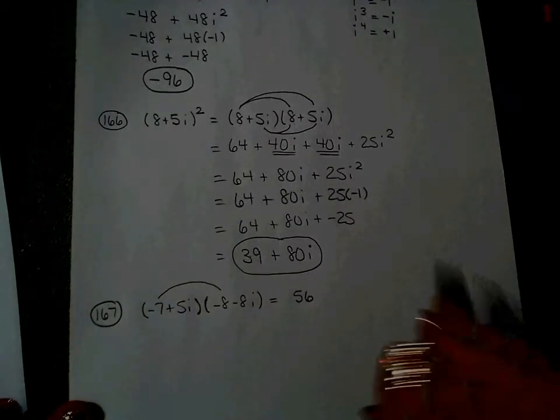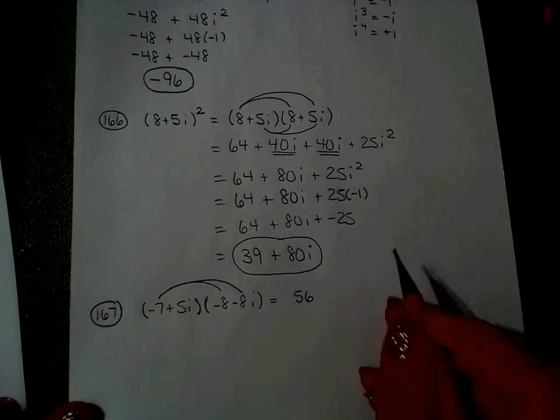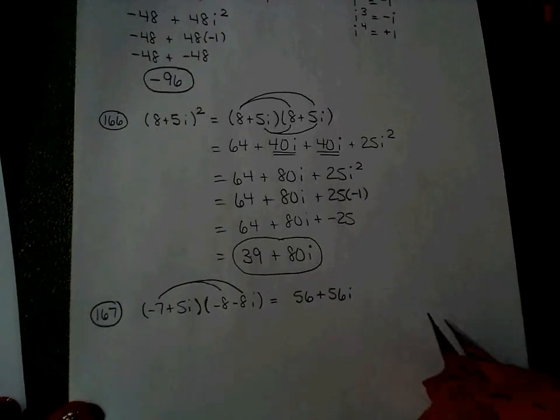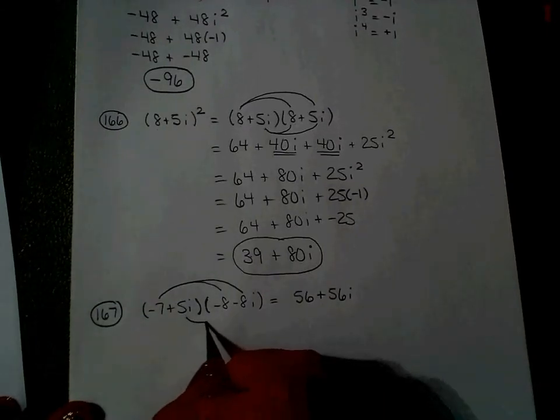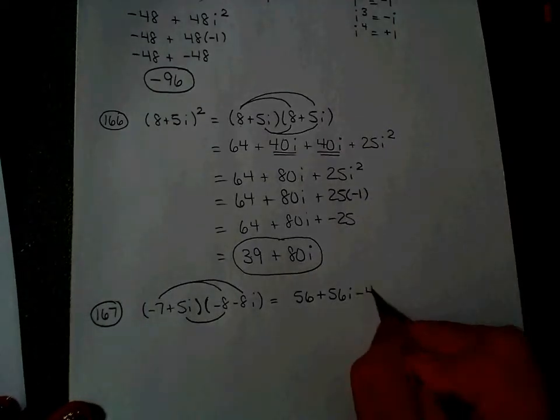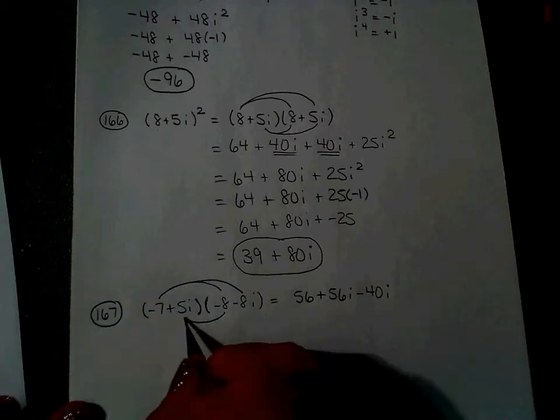Negative 7 times negative 8i is the outer. A negative times a negative is a positive, and that's positive 56i. Inner is positive 5i times negative 8, which is negative 40i. And last, 5i times negative 8i.